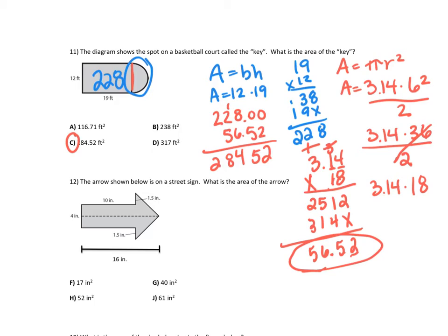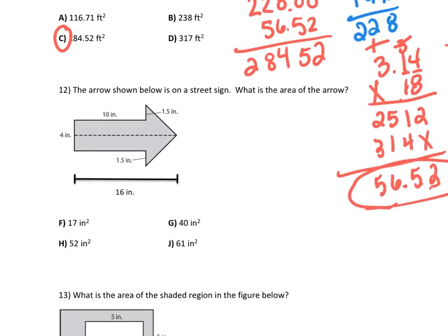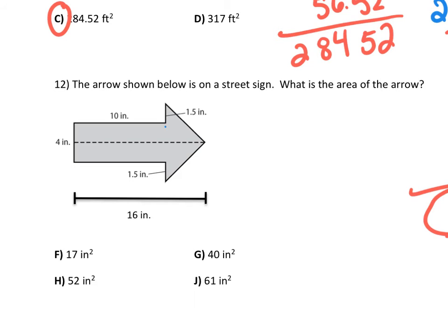Number 12. It says the arrow shown below is on a street sign. What is the area of the arrow? Well, I have two different shapes. I have a rectangle, which is 4 by 10, which is 4 times 10 is 40. And then I have a triangle.